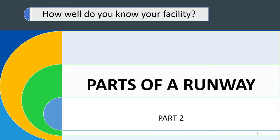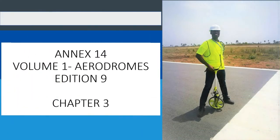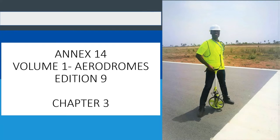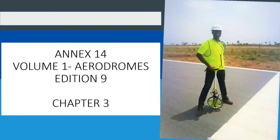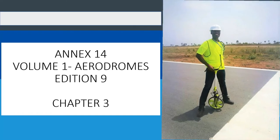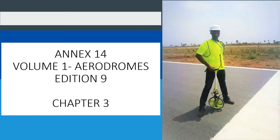We have been looking at how well you know your facility, using it to learn about airport aerodrome facilities. We are currently covering parts of a runway — this is the second part in the series. Our focus will be Annex 14, Volume 1, Aerodromes, Edition 9, specifically Chapter 3, which deals with aerodrome facilities.